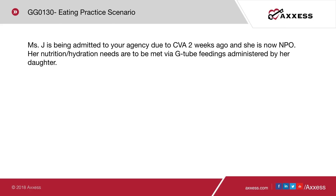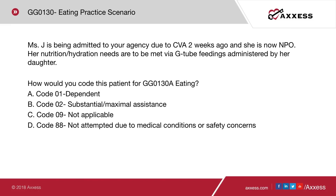Eating practice scenario: Mrs. J is being admitted due to a CVA two weeks ago and is now NPO. Her nutrition and hydration needs are met via G-tube feedings administered by her daughter. How would you code this patient for eating? The answer is D — code 88, not attempted due to medical conditions or safety concerns — because the patient was eating prior to her CVA.